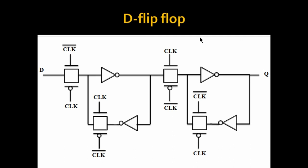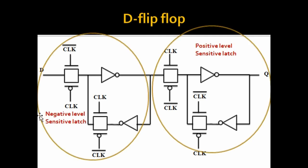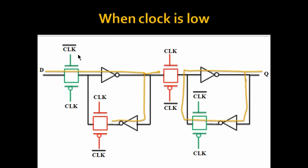Now let's see the internal structure of a D flip-flop. Can you find any similarity between this structure and the structure we just saw for latches? A D flip-flop is nothing but a combination of two latches — this first part is a negative level sensitive latch and this second part is a positive level sensitive latch. So a combination of two level sensitive devices gives us one edge triggered device. This first stage is called the master stage and the second latch is called the slave latch.